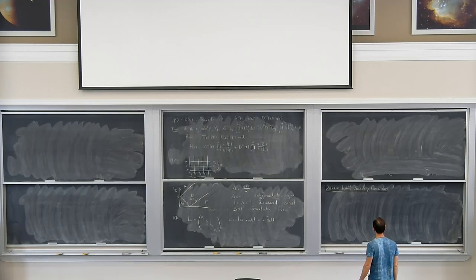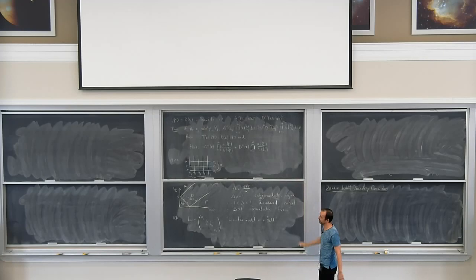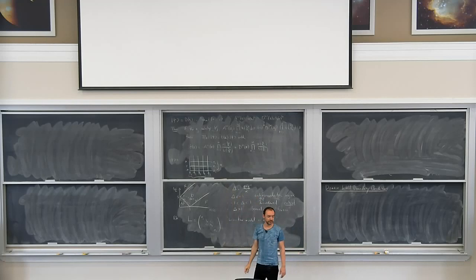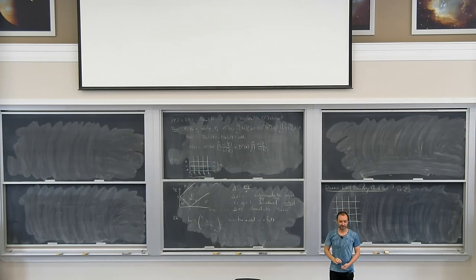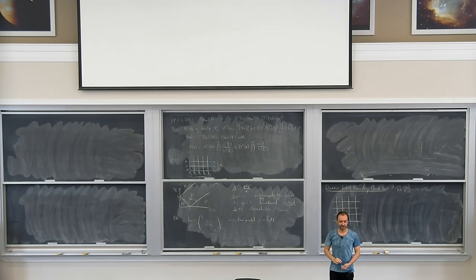What are domain wall boundary conditions? It's just another choice of fixed boundary conditions, very similar to the Bethe states. You fix an integer n. Unfortunately, my conventions for domain wall boundary conditions are the opposite of those for Bethe states — I choose the bottom to be entirely empty rather than occupied. It's annoying, but that's the way it is. There's parity anyway, so you can exchange all occupied with empty.